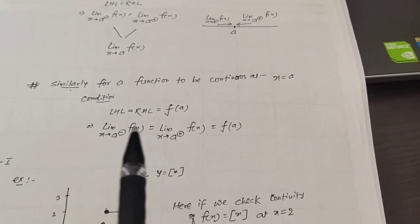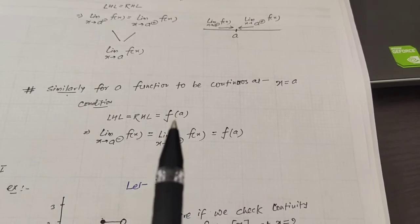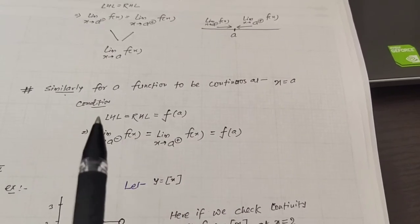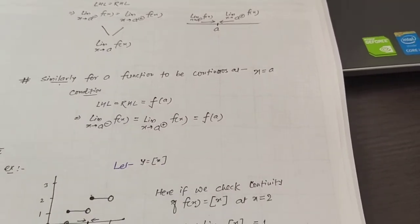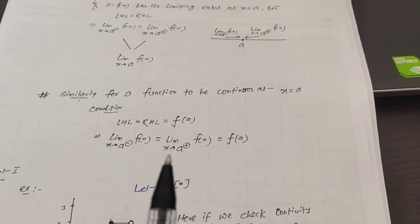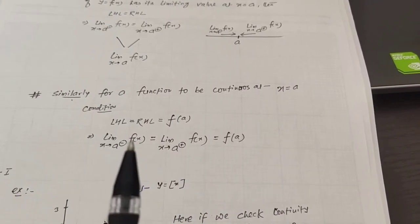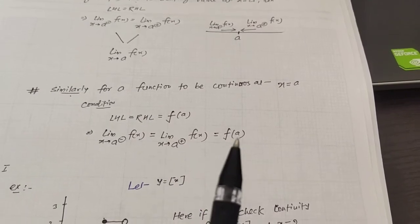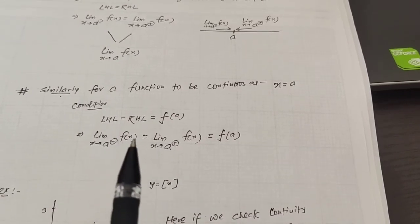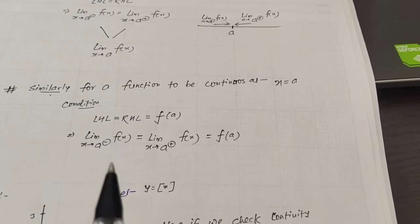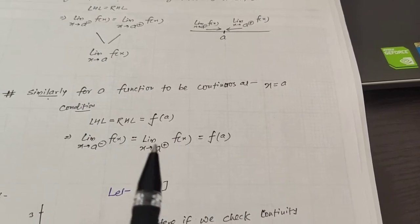So the condition is very clear: if the left-hand limit, right-hand limit, and the value of f(x) at x equals to a are all the same, then the given function is continuous; otherwise it is discontinuous. If any one condition fails — for example, if the left-hand limit is not equal to the right-hand limit, or either of them is not equal to f(a) — then in all such cases when these three are not equal, the function is always discontinuous. Only when all three are equal is the function continuous.